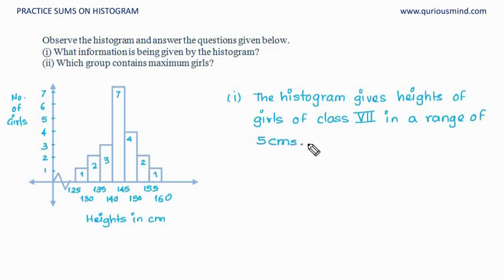And which group contains the maximum girls? So you can easily see that this group, which is group 140 to 145, and this number of girls are 7.